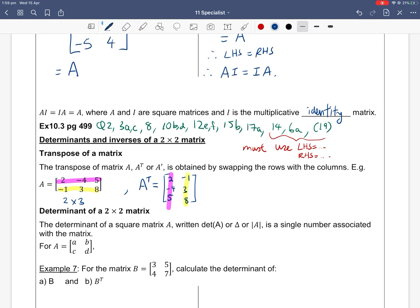our second column becomes [-1, 3, 8]. So now A^T is a 3×2 matrix. If A is m×n, then the transpose is n×m, switching the rows and columns around.